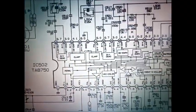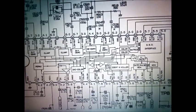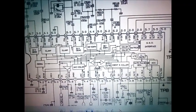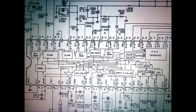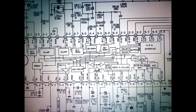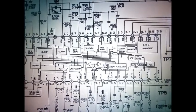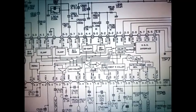And then next check IC502 TA8750. This is the IC. Check all pin number voltages like this: 1, 2, 3, 4, 5, 6, 7. All these are low voltages, please check.